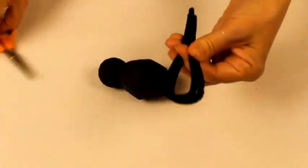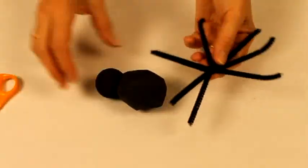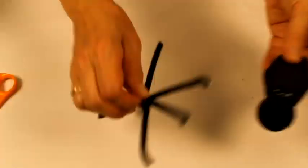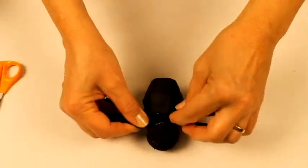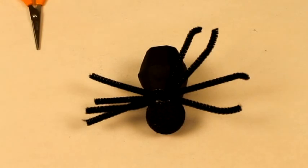Take two pipe cleaners that you cut in two. You will have four pieces of pipe cleaners that you twist together in the middle to form the eight legs of the spider. Glue the crossing of the legs between the head and the body of the spider with a glue gun.